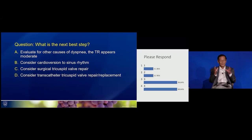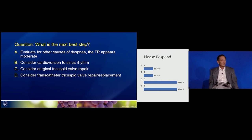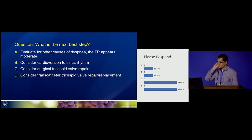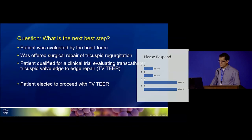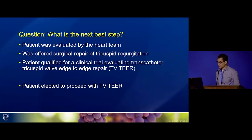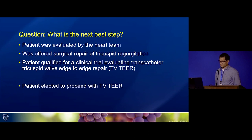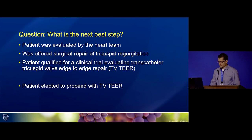The RV dilates within the pericardium, the LV shrinks down and can't fill, the wedge pressure goes up, and the patient gets dyspnea. This patient was a reasonable candidate for surgical tricuspid valve repair — the gold standard. He was evaluated by an interventional cardiologist and an experienced heart surgeon and offered surgical repair, but expressed a strong desire for a less invasive approach and was ultimately enrolled in a clinical trial for transcatheter edge-to-edge repair.